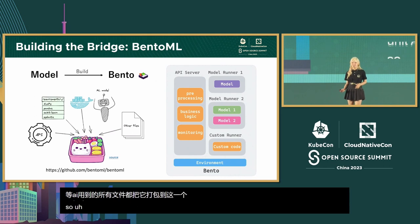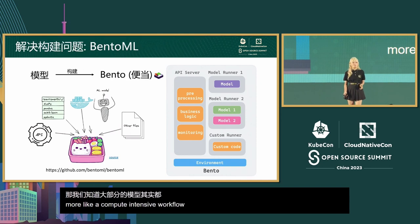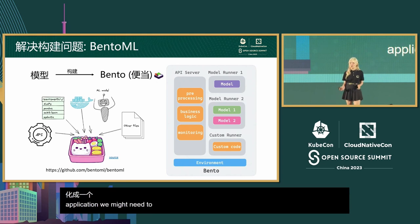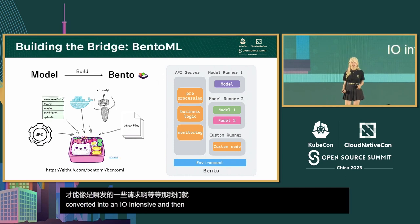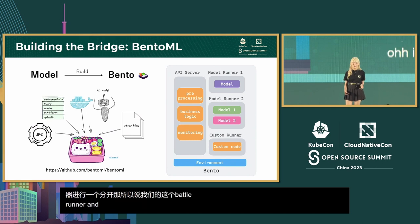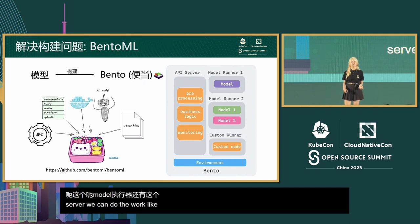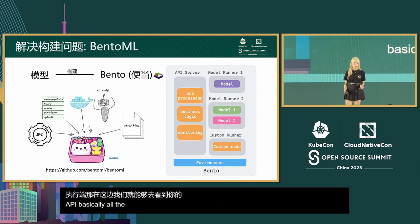All models are basically compute-intensive workloads. But when a model needs to be transformed into an application, we may need to handle concurrent request scenarios — making it IO-intensive. That's why we separate the API server and the runner in your Bento. A typical Bento contains three parts: API server, model runner, and the environment. In the API server, we do preprocessing, add business code, expose metrics, and define your API.